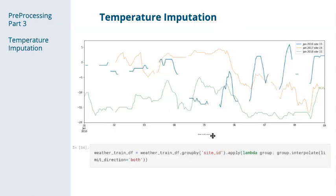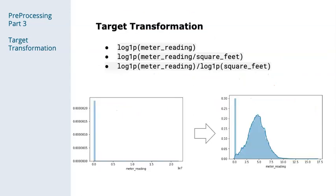There was also a lot of missing values in the weather data. We found that using simple linear interpolation to fill in the missing values helped our models. The final type of pre-processing that we applied was target transformations. The obvious transformation to try is the log1p of meter reading, but we also tried some less obvious transformations. For example, we standardized meter reading by dividing by square feet, so instead of predicting energy usage, we were predicting energy usage per square foot. Training models with these transformed targets helped us add diversity to our ensembles.